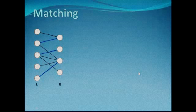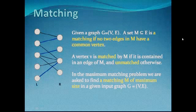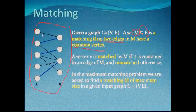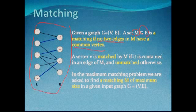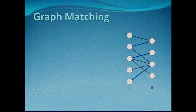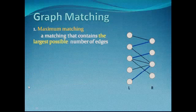Now we come to another very important concept: matching. A matching is a set M that is a subset of the edges, such that no two edges in M share a common vertex. In the demo, the original lines represent the full graph and the blue lines represent the matching, since none of the blue lines share a common vertex. A vertex is matched if it is covered by an edge in M; otherwise it is unmatched. In the maximum matching problem, we find a matching M of maximum size in a given graph G = (V, E). A maximum matching is the matching that contains the largest possible number of edges.